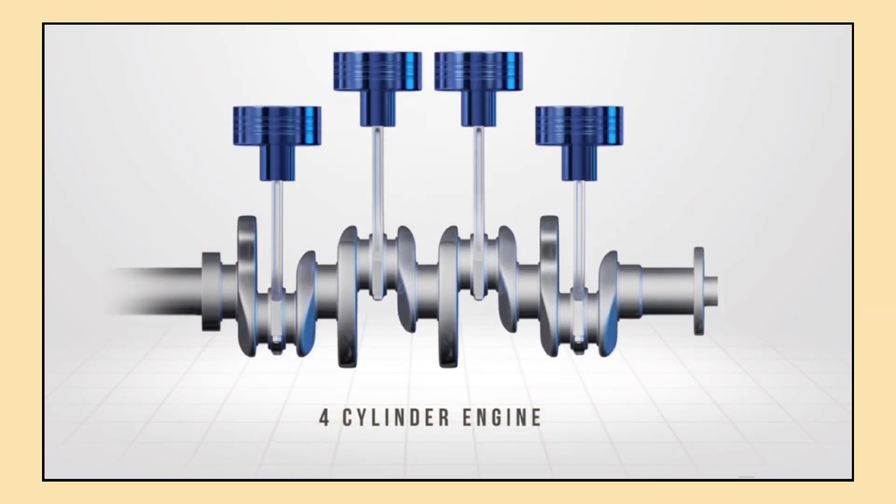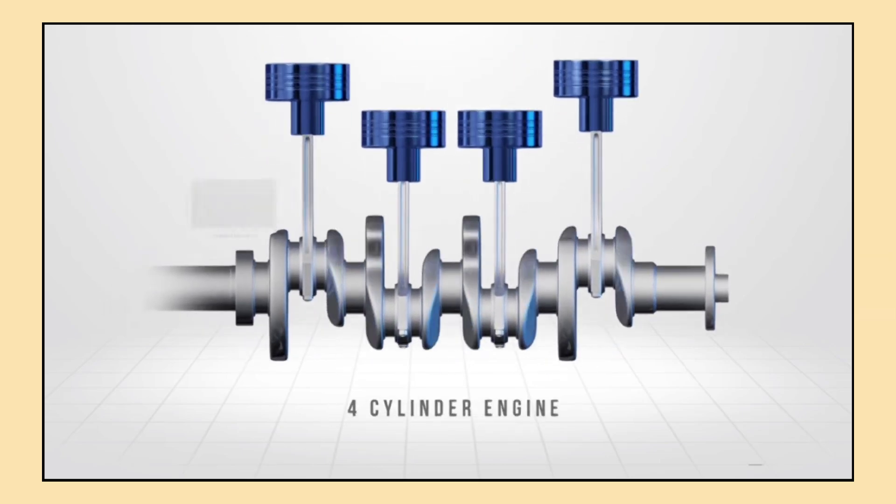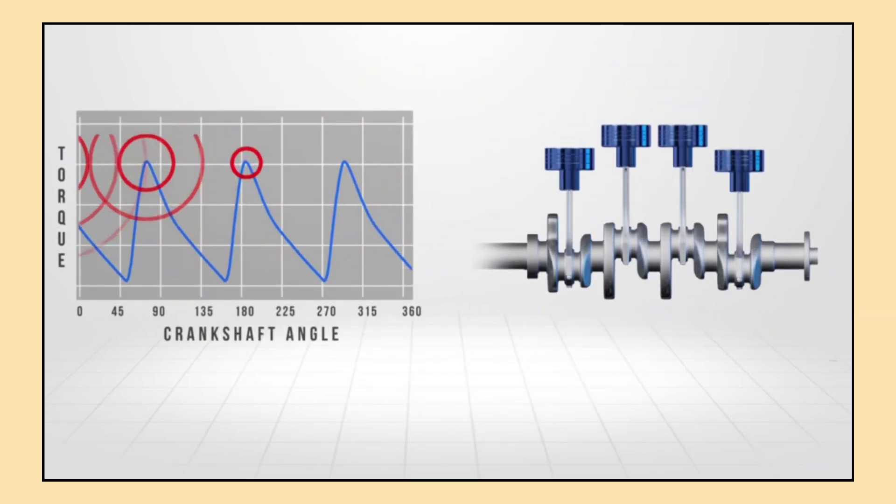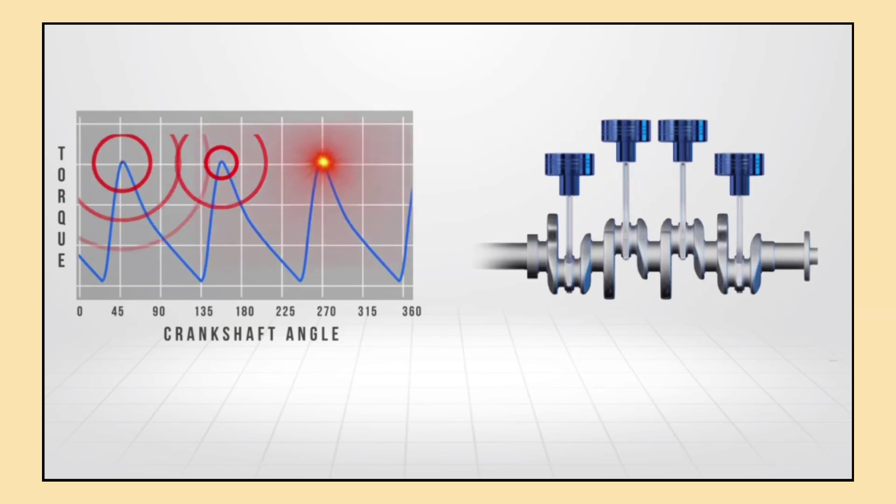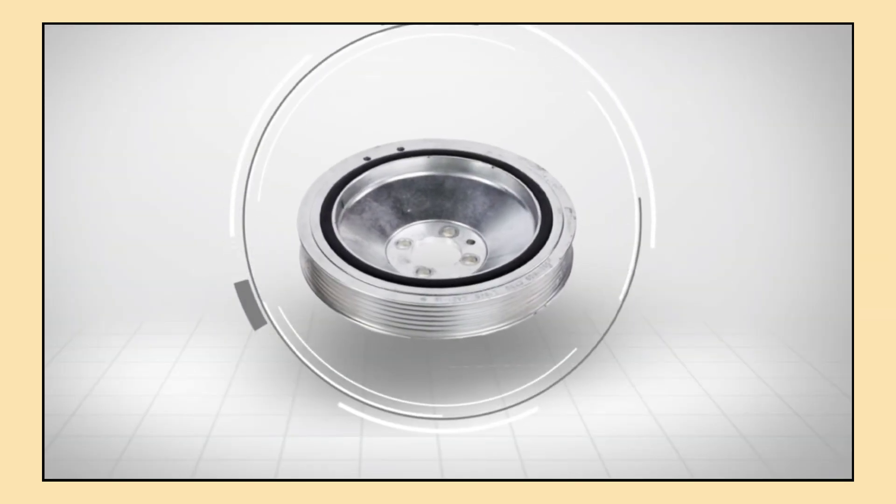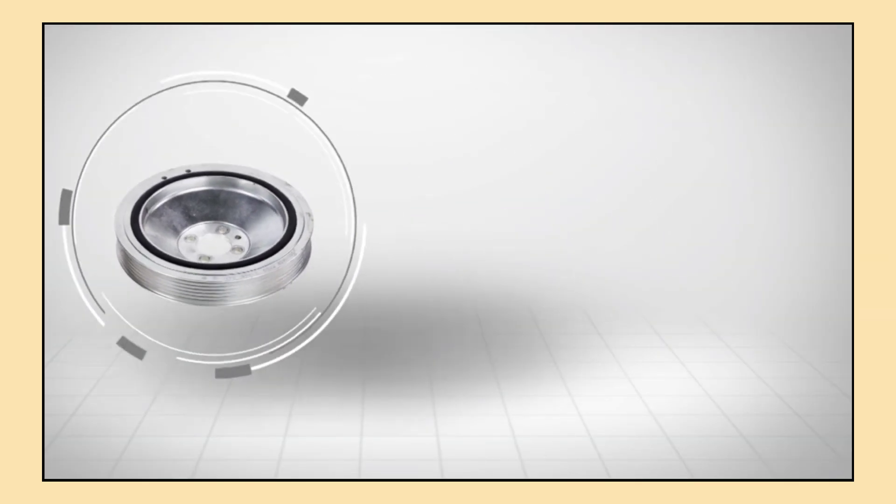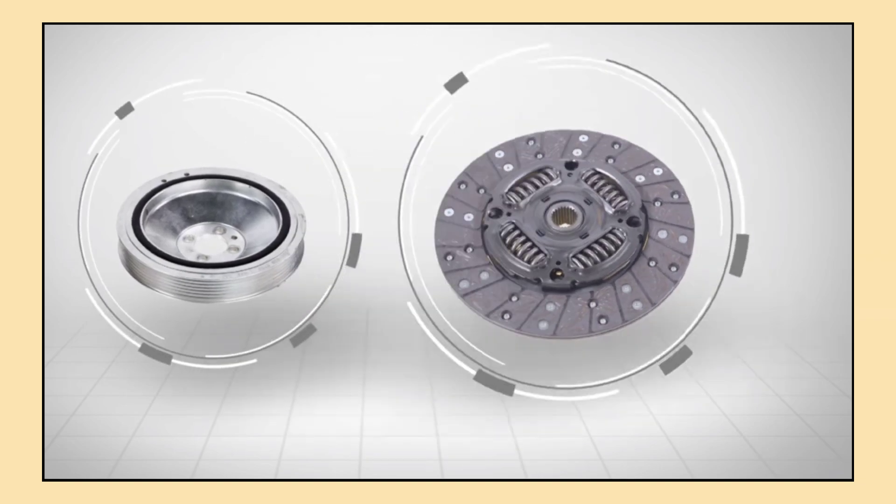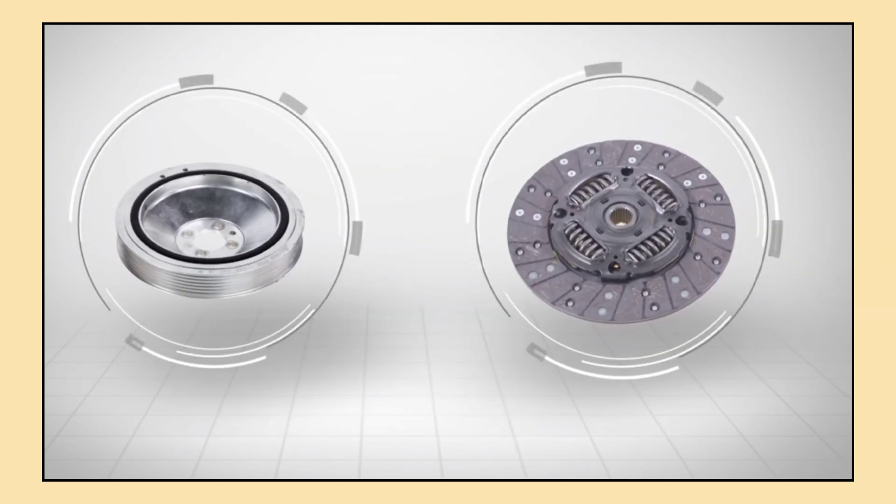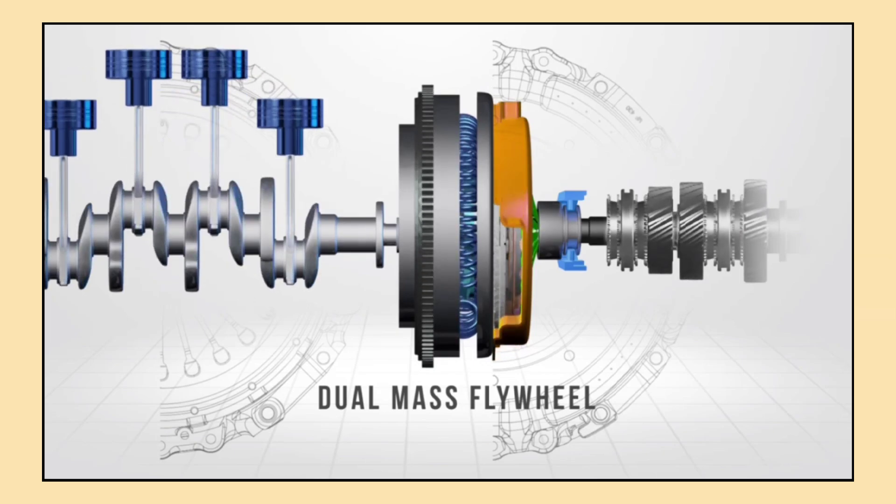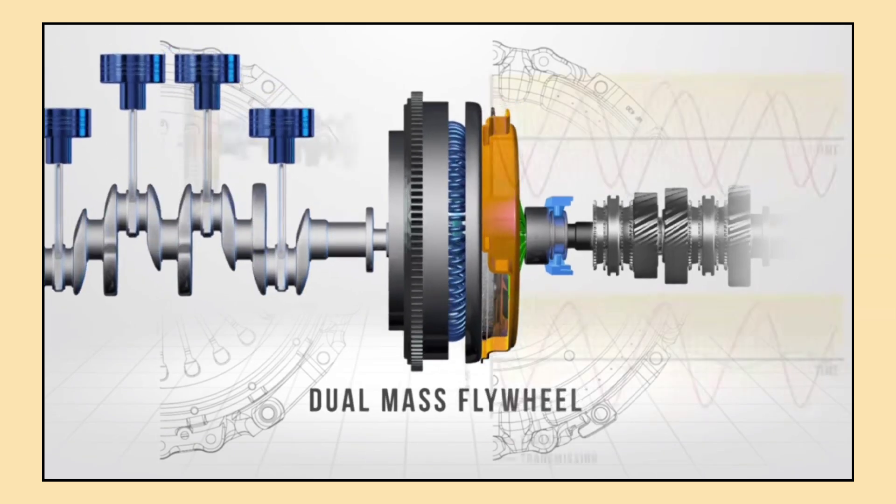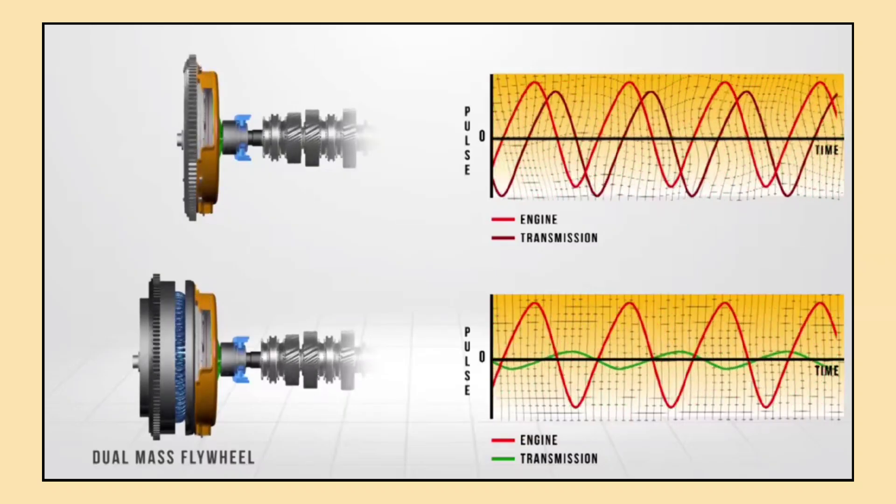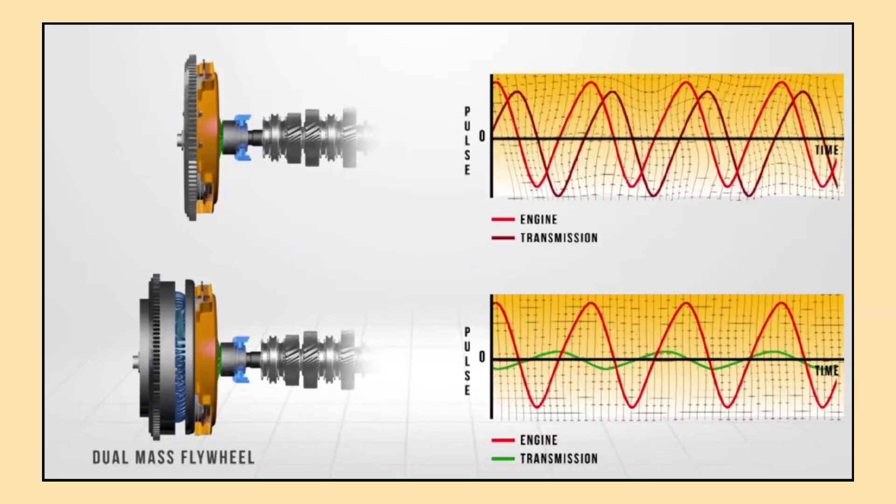When the engine runs, it works by burning fuel in its cylinders. This burning process produces power, but not in a smooth or continuous way. Instead it happens in bursts because the engine fires one cylinder at a time. Imagine trying to push a car, but each time you push it's in quick uneven bursts. Without something to help smooth out these bursts, the car would jerk or shake while driving. This would make the ride uncomfortable and the engine less efficient. That's where the flywheel comes in.